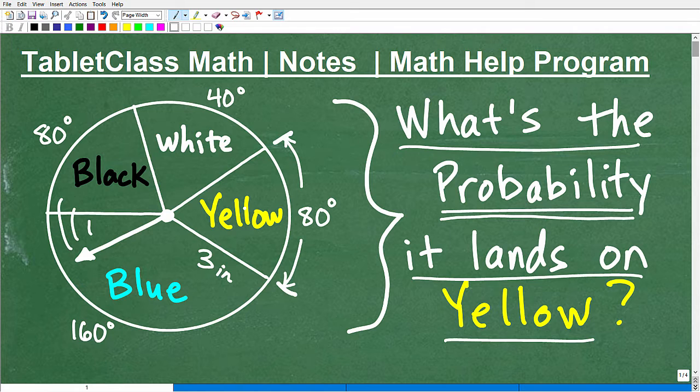So what we're looking to determine is what is the probability that this spinner lands on yellow? We've got to study the information because we have a couple different options. It could land on yellow, or blue, black, and white, and obviously we're dealing with a circle, and we're given some interesting information here, and that is how many degrees these little sectors are.